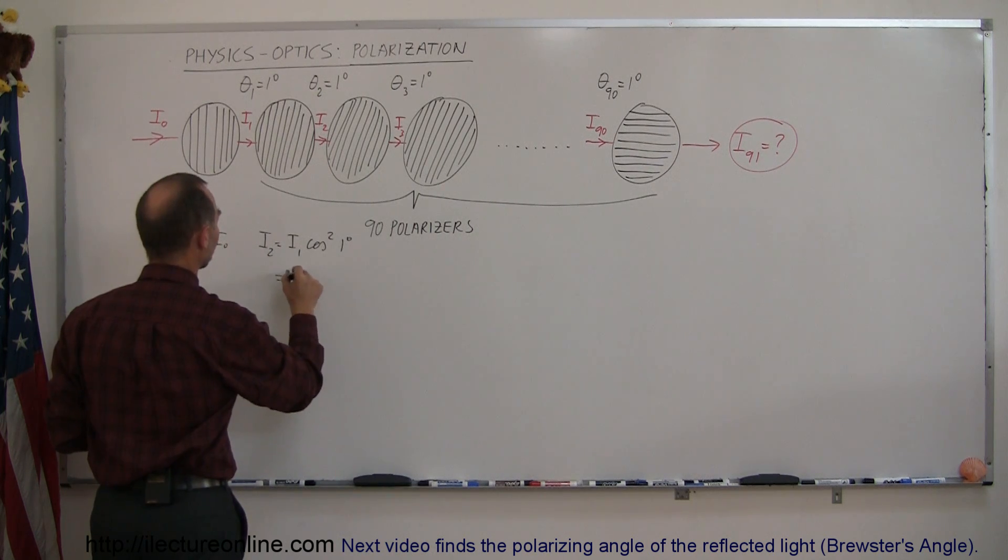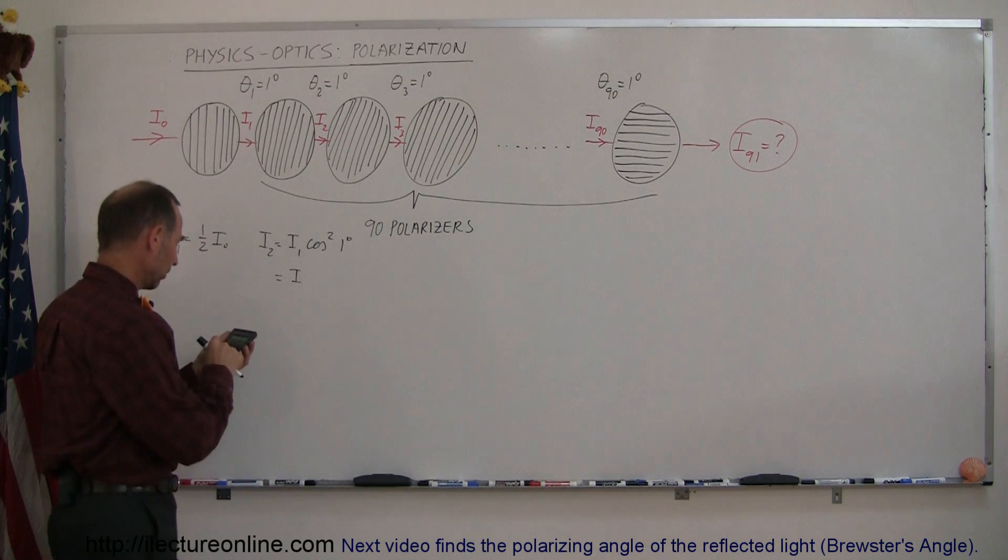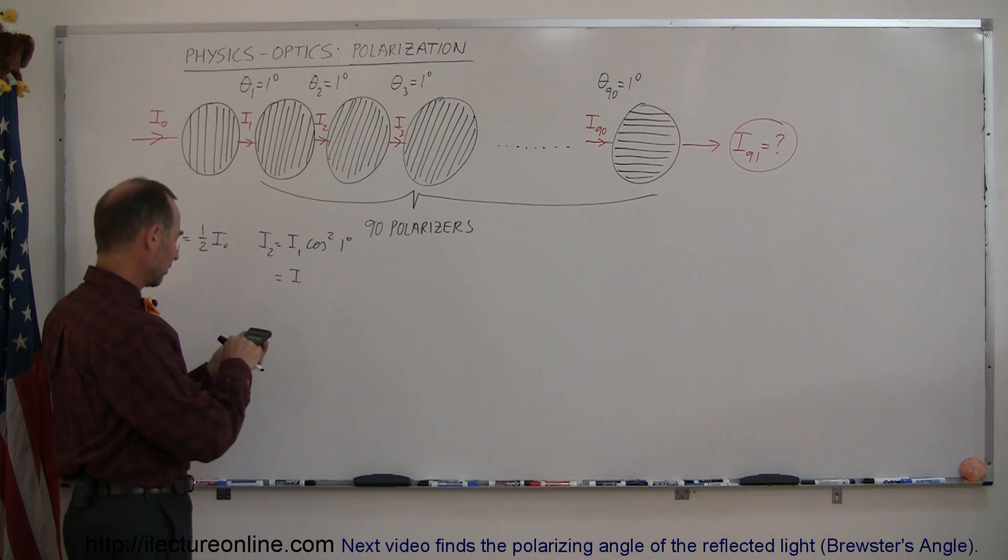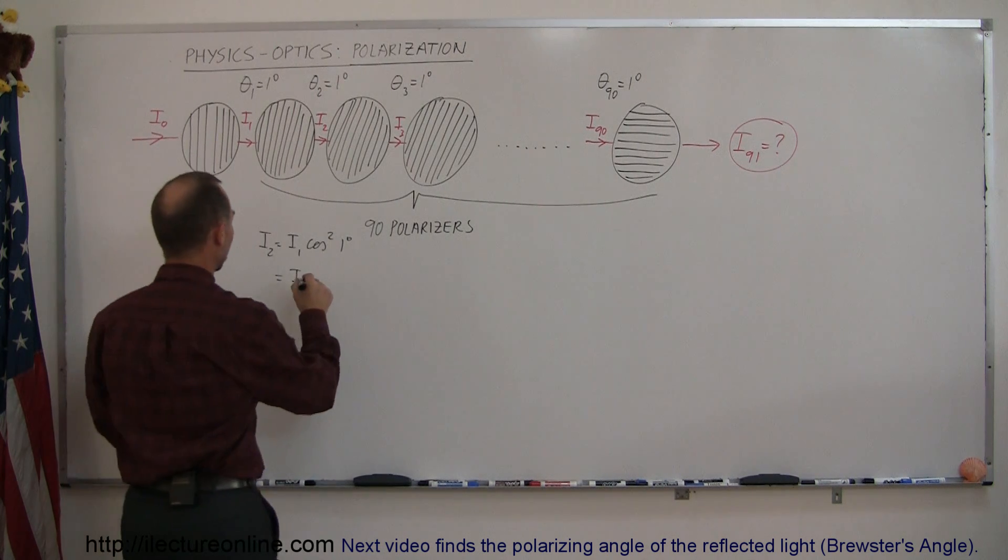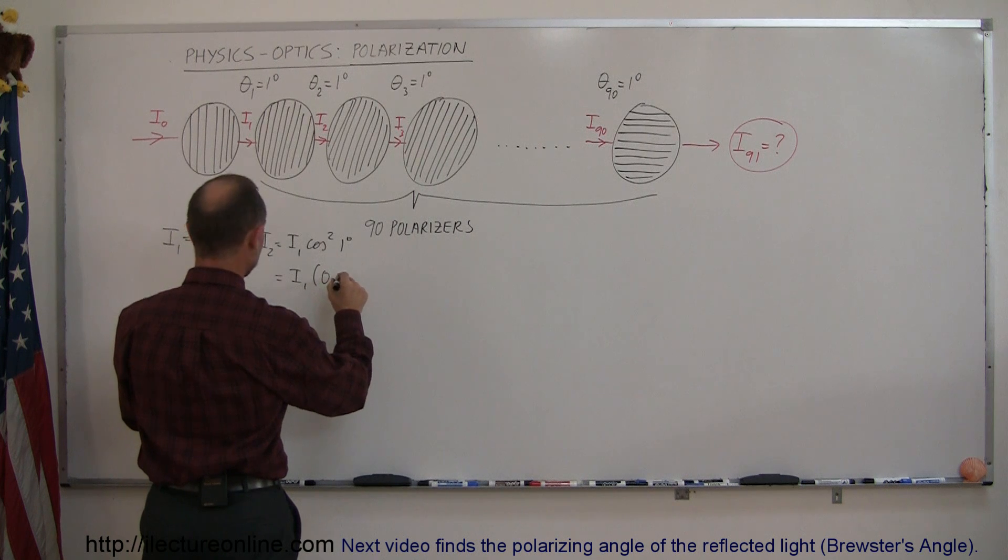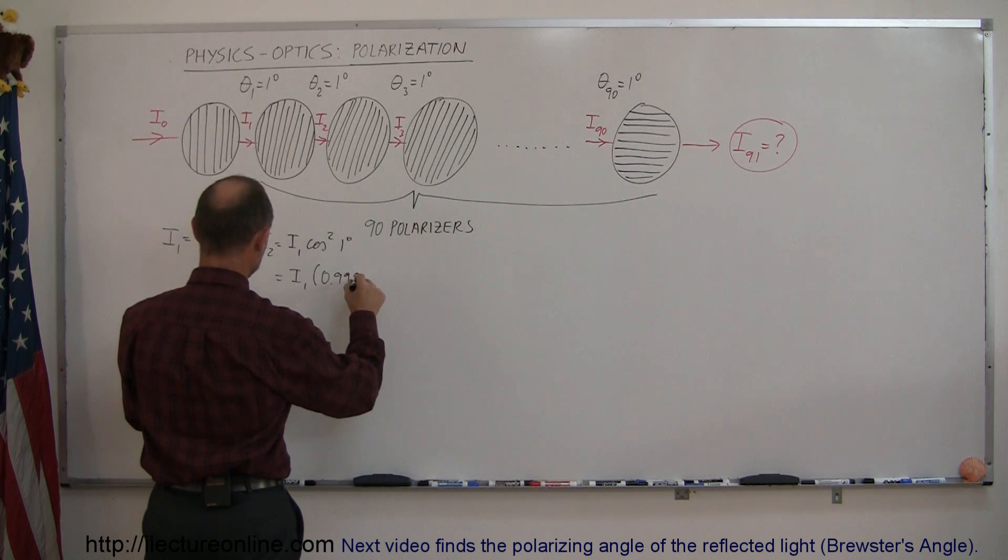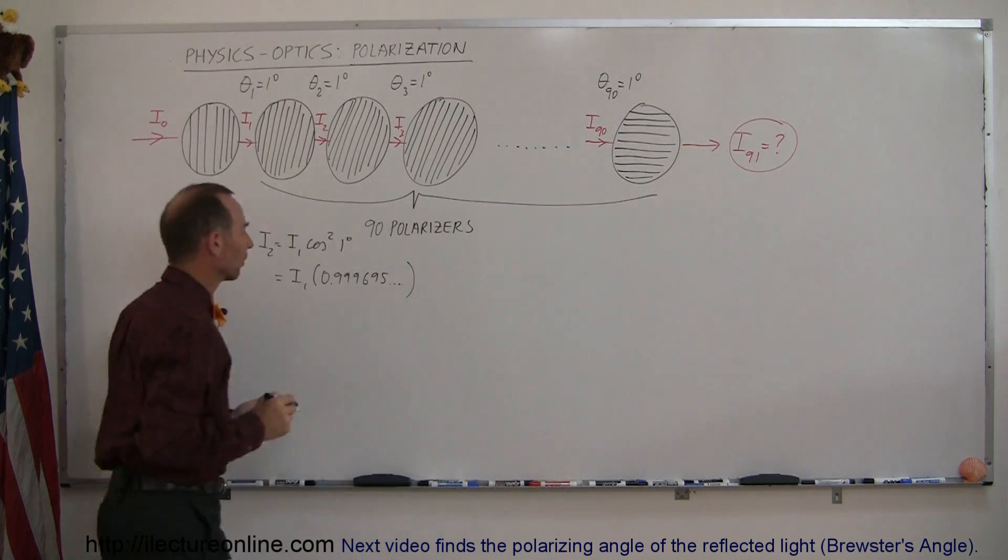And so that would be equal to i sub 1 times, let's find out what the cosine of 1 degree is. Take the cosine of that, and then of course we have to square that. We get i sub 1 times 0.999695 and so on like that.